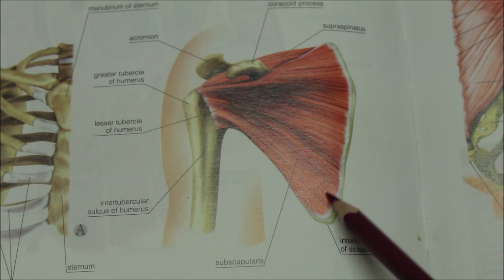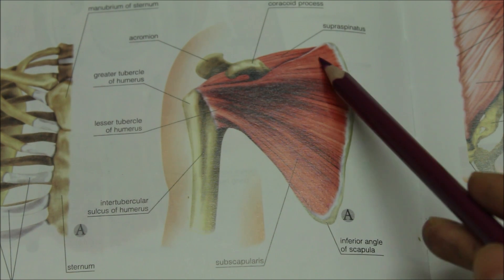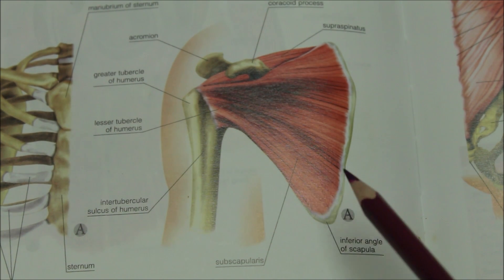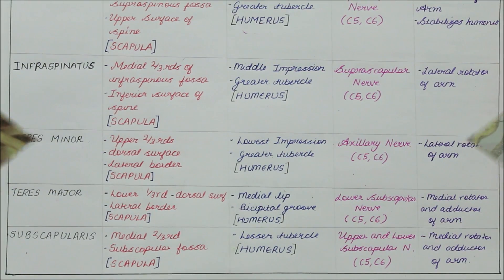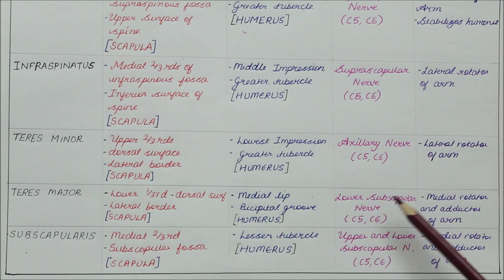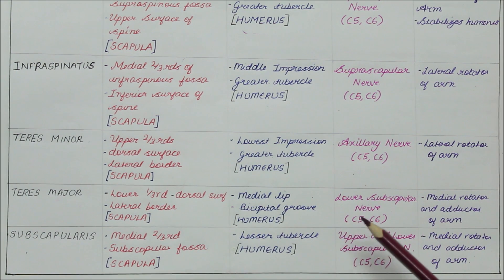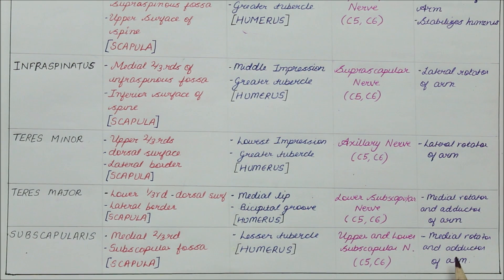This is the subscapularis muscle. It originates from the medial two-thirds of the subscapular fossa of the scapula and inserts into the lesser tubercle of the humerus. Moving on to nerve supply, the subscapularis is supplied by both the upper and lower subscapular nerves — in the teres major it was only the lower subscapular nerve, but in the subscapularis we have both. The action of the subscapularis includes medial rotation and adduction of the arm, similar to the action of the teres major.